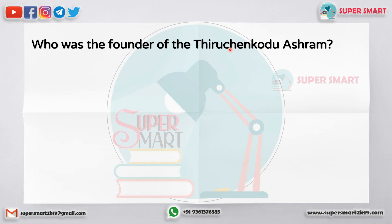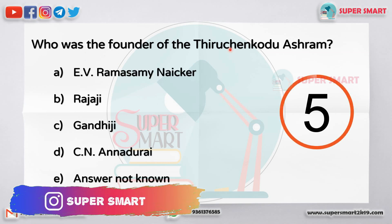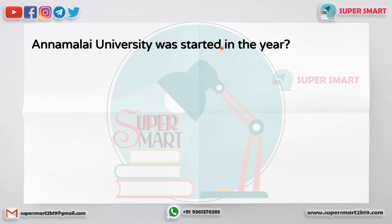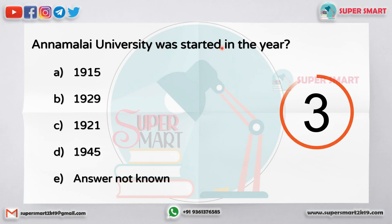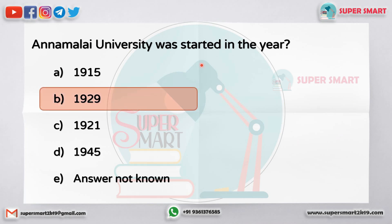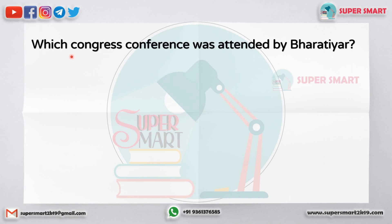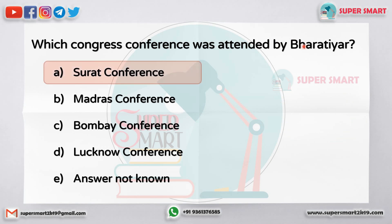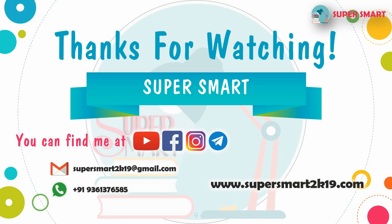Who was the founder of Firichangodu Ashram? The answer is Rajaji. Annamalai University was started in the year dash. Which Congress conference was attended by Bharatiyaar? The answer is the Surat Conference.